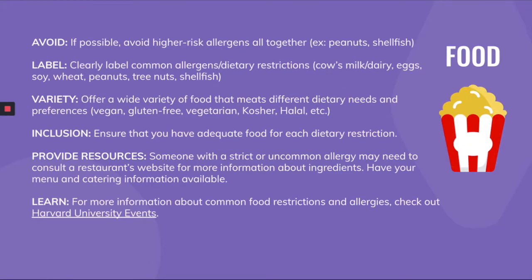Our next topic is food. Food is one of the best ways to get students to come to an event; however, it can also be a key way to make students feel like the event wasn't made for them if they don't have food they can eat. Some things to consider: avoid higher-risk allergens if at all possible, label common allergens and dietary restrictions, and offer a wide variety of food that meets different dietary needs and preferences. Make sure you have adequate food for each dietary restriction — a full meal available for anyone who falls into different categories of food needs.